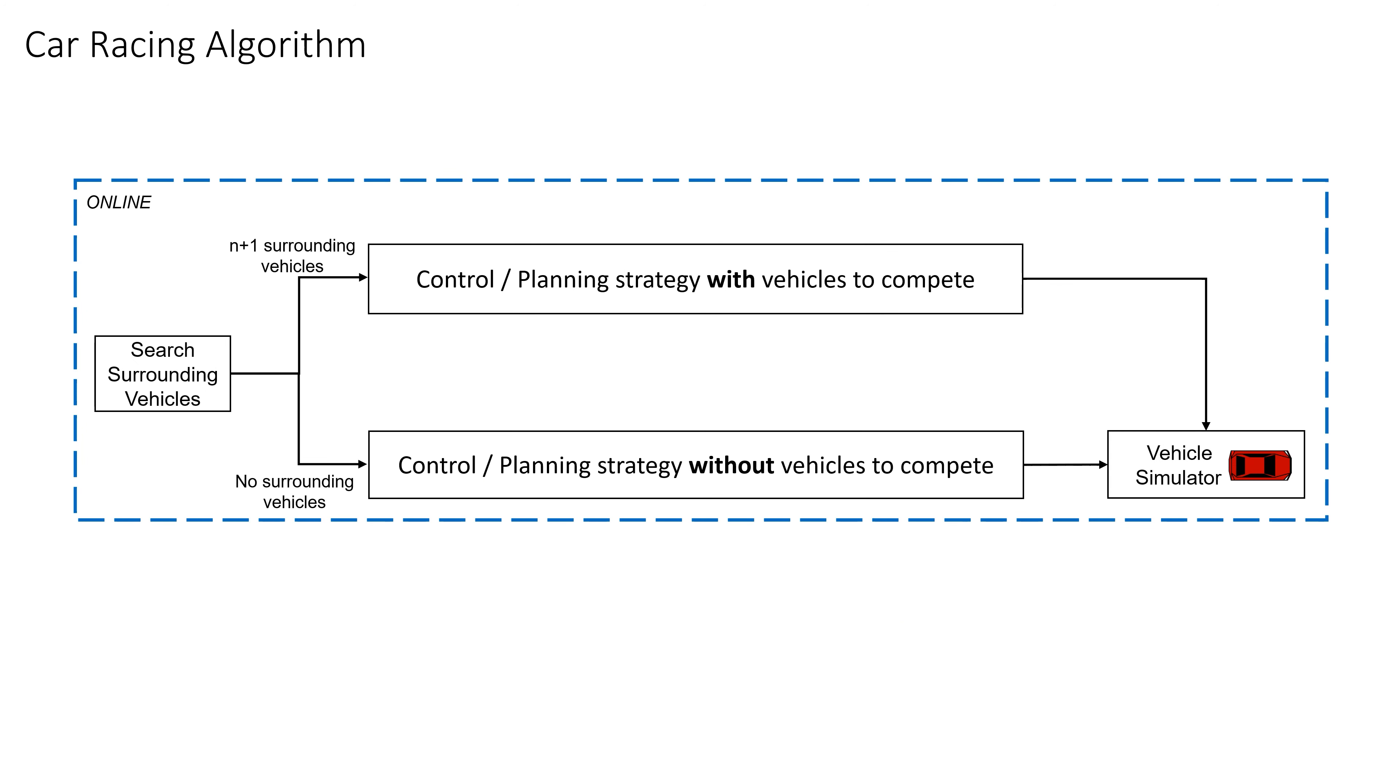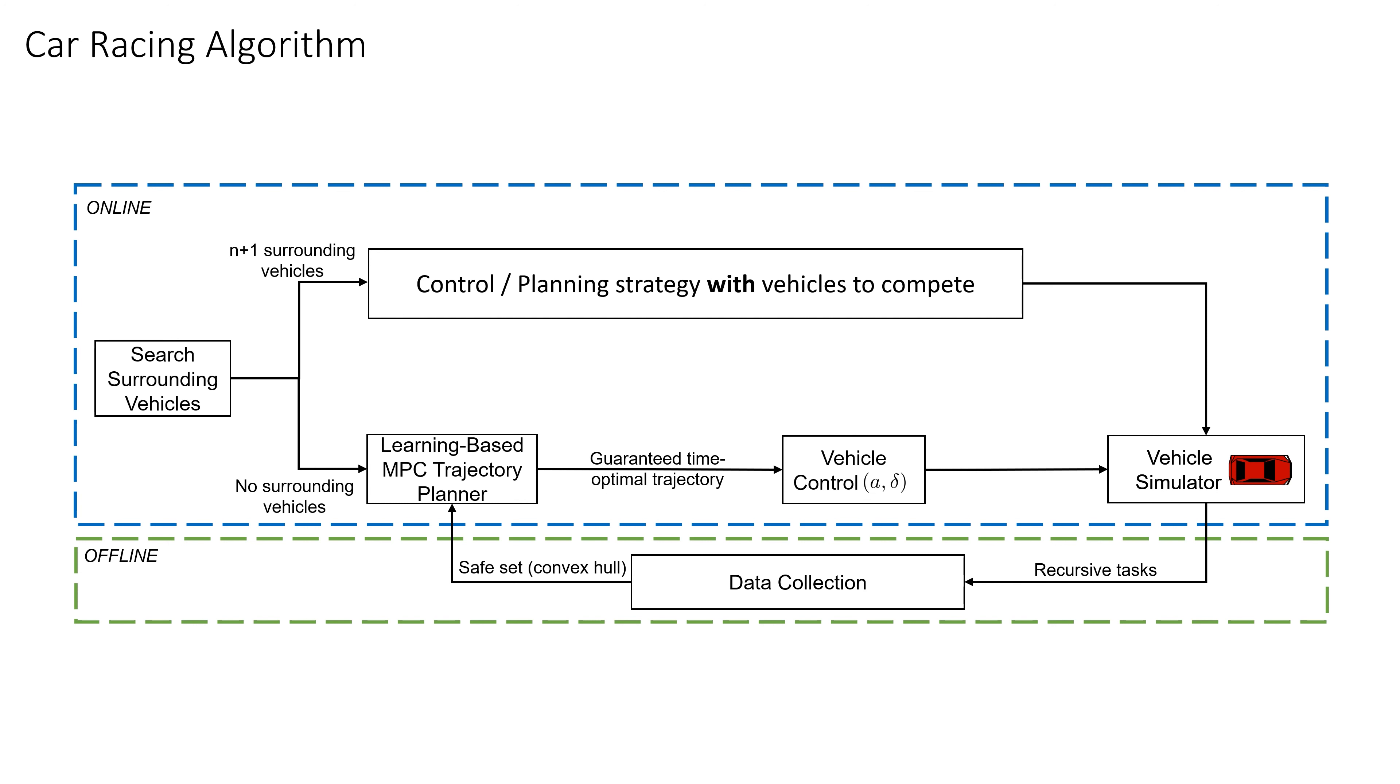The proposed racing strategy switches between two modes. When there are no surrounding vehicles, a learning-based model predictive control trajectory planner is used to guarantee that the ego vehicle achieves better lap timing.